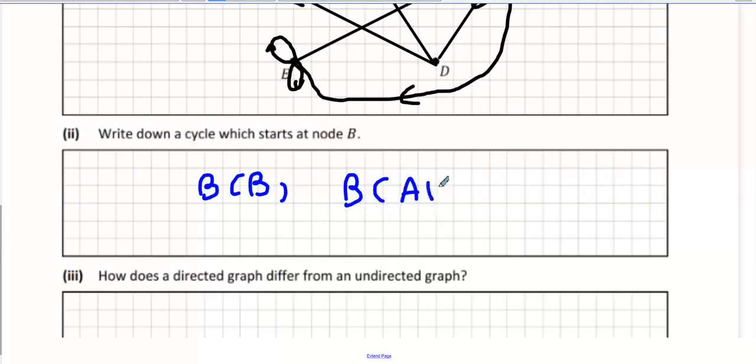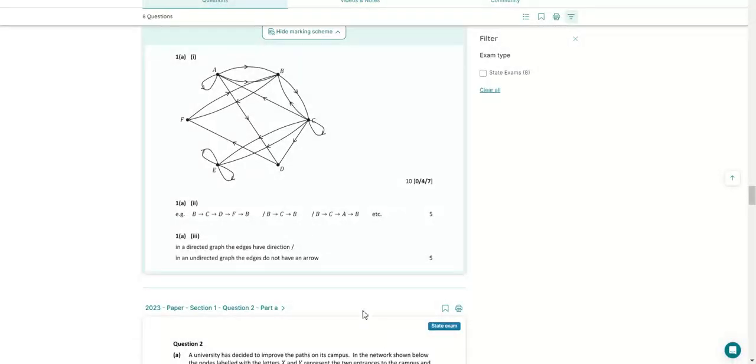Not going to question that. We have that right, don't we? B to C to D to F. B, C, B. B, C, A, B. We're all done.